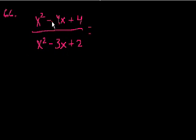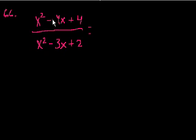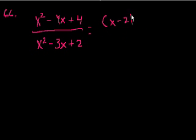So the numerator — what two numbers when I multiply them equal 4 and when I add them equal minus 4? That's minus 2: minus 2 minus 2 is minus 4, and minus 2 squared is plus 4. So this factors as x minus 2 times x minus 2.